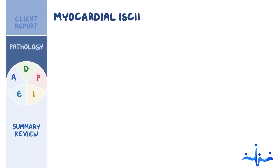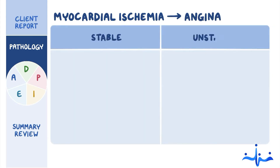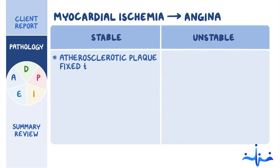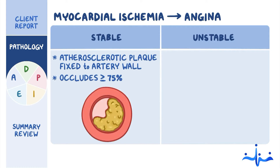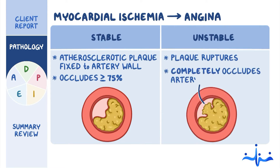Myocardial ischemia leads to a type of chest pain called angina, which can be either stable or unstable. Stable angina usually occurs when the atherosclerotic plaque is fixed to the artery wall and occludes at least 75% of the coronary artery, whereas with unstable angina, the plaque ruptures and almost completely occludes the artery lumen.